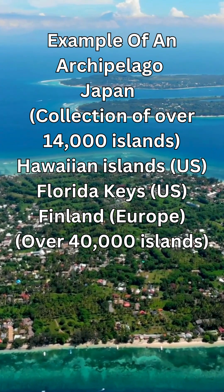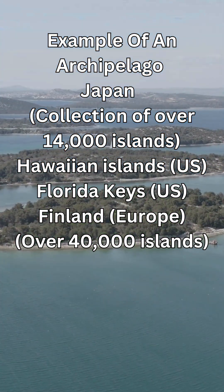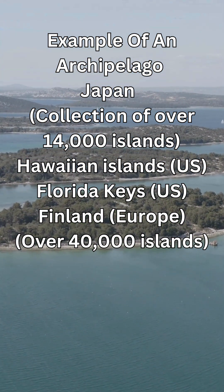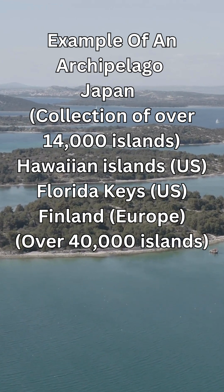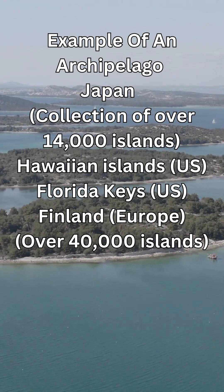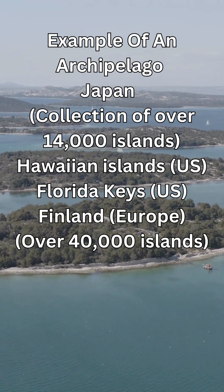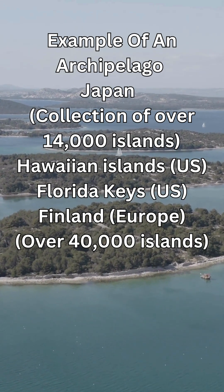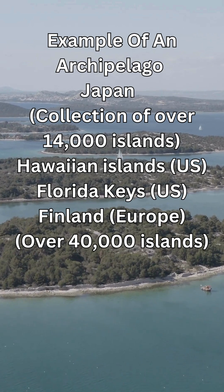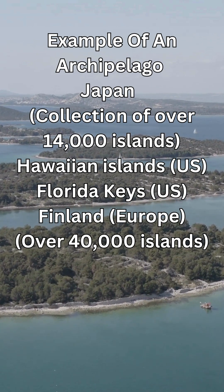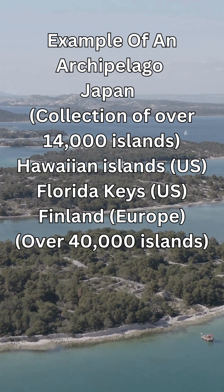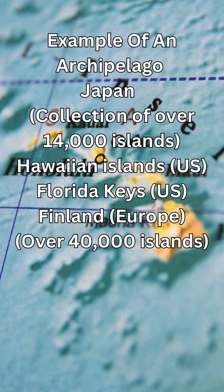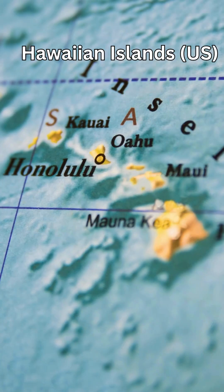Some countries are, in essence, an archipelago, like Japan. Some countries, like Finland in Europe, have the most amount of islands in their country — 40,000. The U.S. has a state that's just an archipelago, which is Hawaii, a bunch of volcanic islands in a long chain, and also the Florida Keys. In the Caribbean, you have the Lesser Antilles, or areas like Puerto Rico, which are an archipelago — a form of oceanic islands separated away from the main continents.